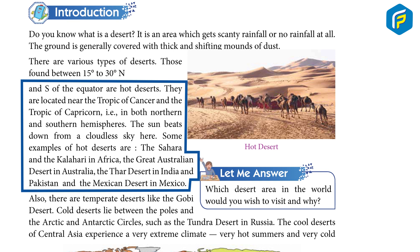In both northern and southern hemispheres, the sun beats down from a cloudless sky here. Some examples of hot deserts are the Sahara Desert and the Kalahari in Africa, the Great Australian Desert in Australia, and the Thar Desert in India and Pakistan, and the Mexico Desert in Mexico.